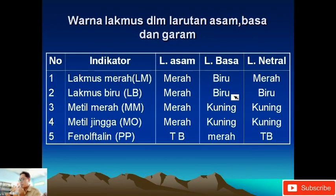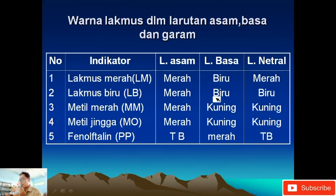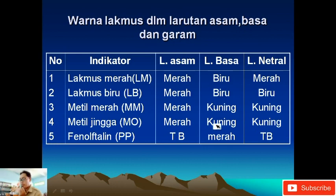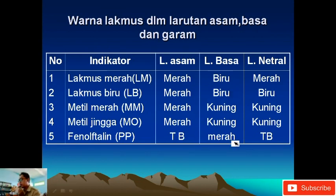Warna lakmus dalam larutan: Lakmus merah jika dia asam akan berwarna merah, jika basa berwarna biru, kalau netral dia tidak berubah. Lakmus biru jika asam berubah jadi merah, jika basa tetap biru, kalau netral tidak berubah, tetap menjadi biru. Metil merah berubah merah jika asam. Metil jingga juga berubah merah jika asam, kalau basa berubah menjadi warna kuning, kalau netral juga berubah menjadi kuning. Fenolftalein tidak berwarna jika asam, jika basa berubah menjadi warna merah, sedangkan kalau netral atau garam juga tidak berubah warna.